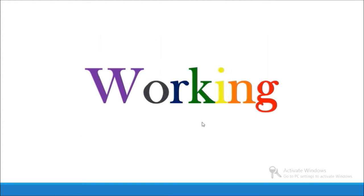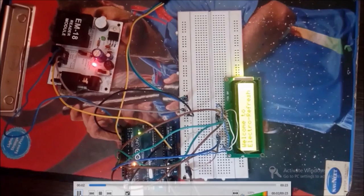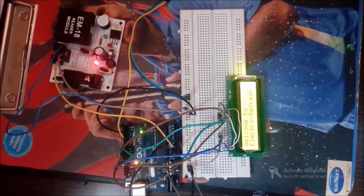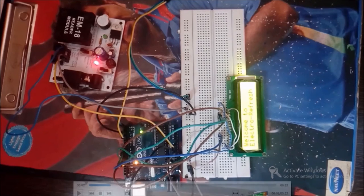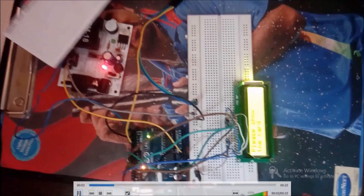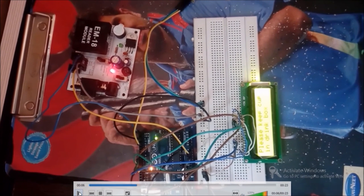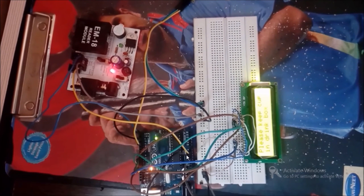So let's move towards working now. So here is our demonstration. So firstly we are putting the message welcome to electro refresh, and then show the card. So here the user is showing its card to the EM18 module.